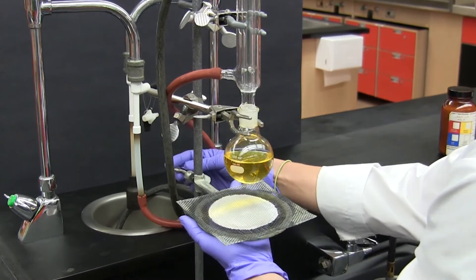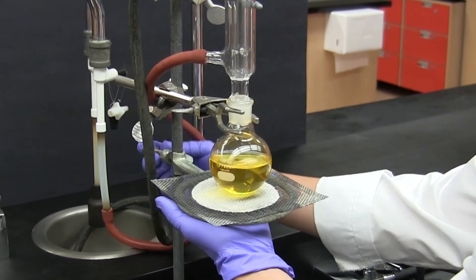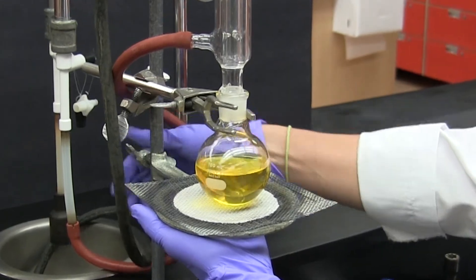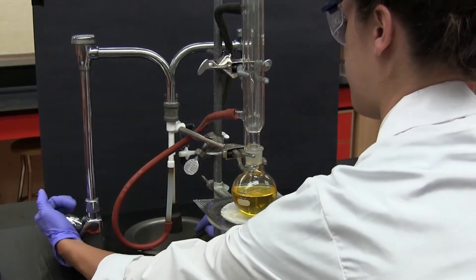A wire gauze supported by a ring is placed directly underneath the reaction flask. The wire gauze will help to distribute the heat from a Bunsen burner. Before heat is applied the water flow is started.